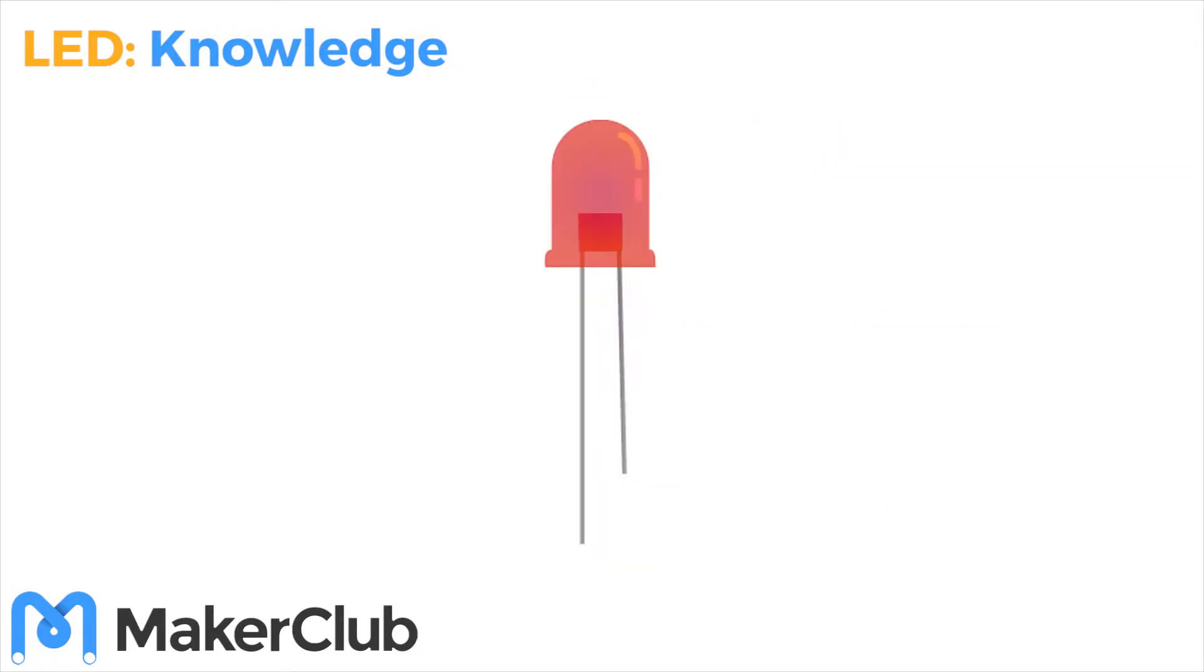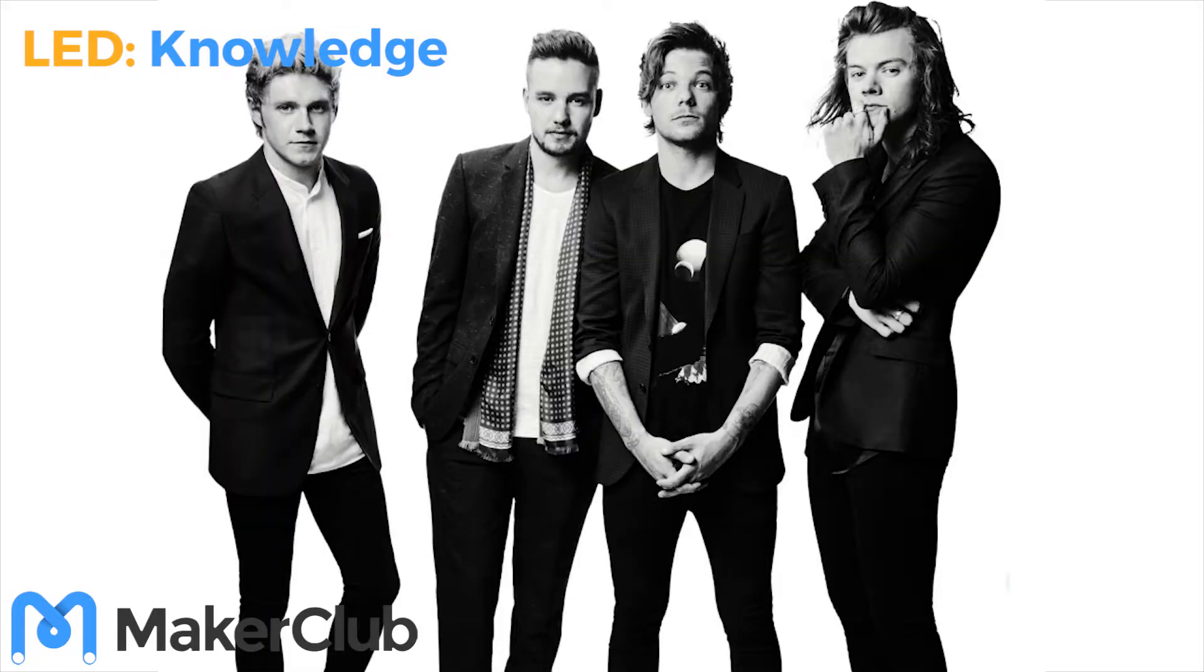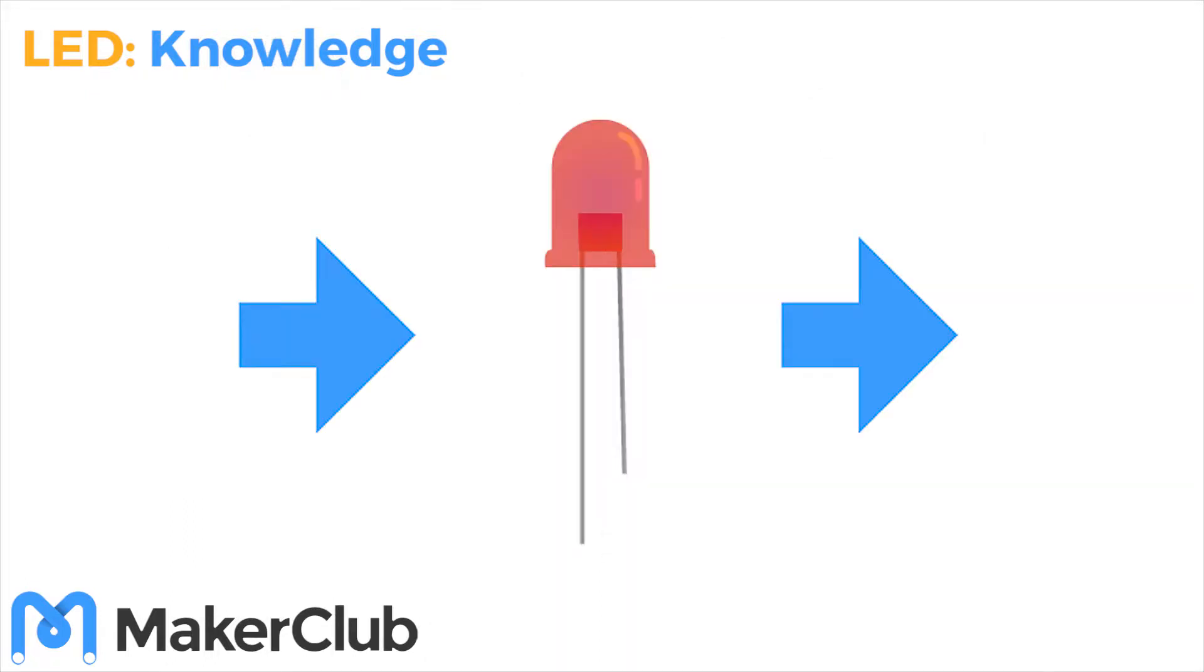A diode is an electronic component which allows current to flow in one direction. Not that one direction. When current flows through a light emitting diode it will glow.